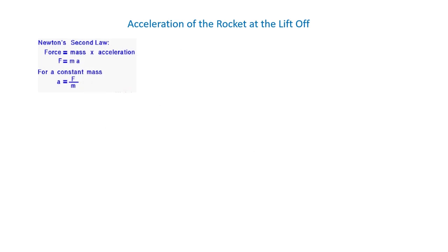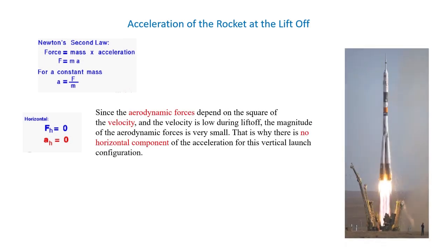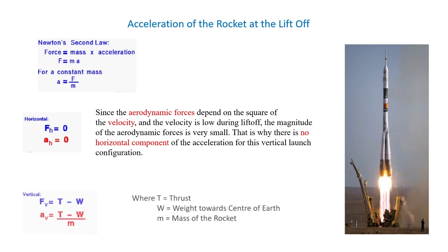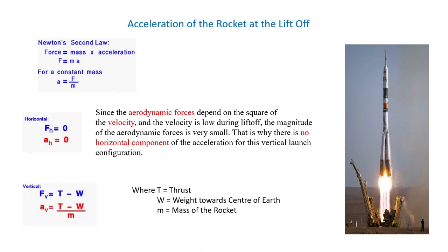Now let's look at the acceleration of the rocket at liftoff. According to Newton's second law of motion, force is equal to mass times acceleration. Therefore, for a constant mass, acceleration is equal to force divided by mass. Since aerodynamic forces depend on the square of velocity and velocity is low during liftoff, the magnitude of aerodynamic forces is very small. That is why there is no horizontal component of acceleration for this vertical launch configuration.